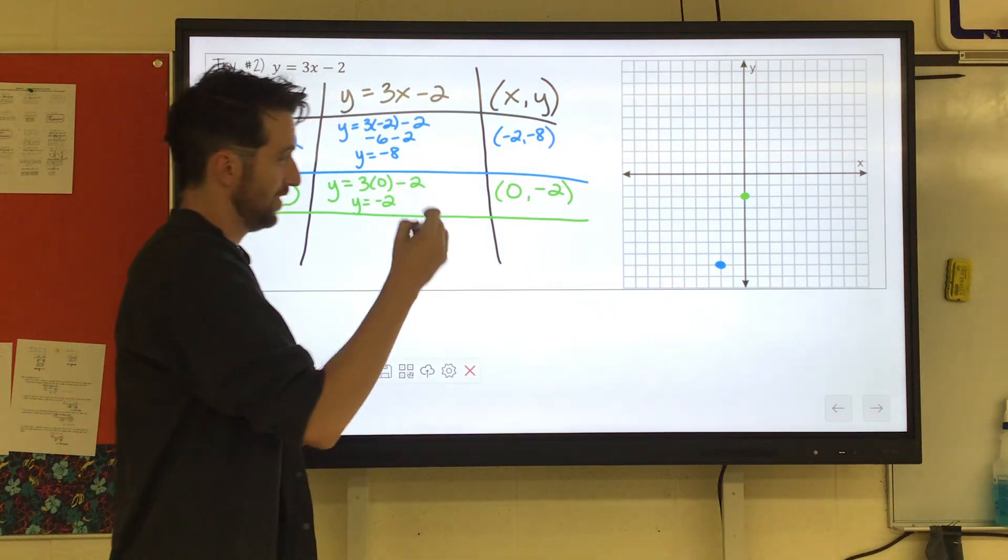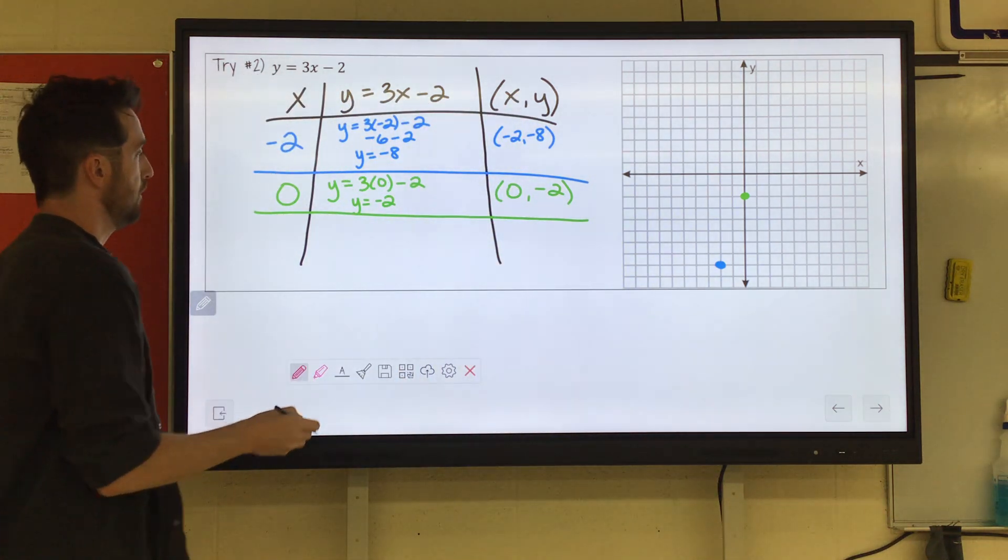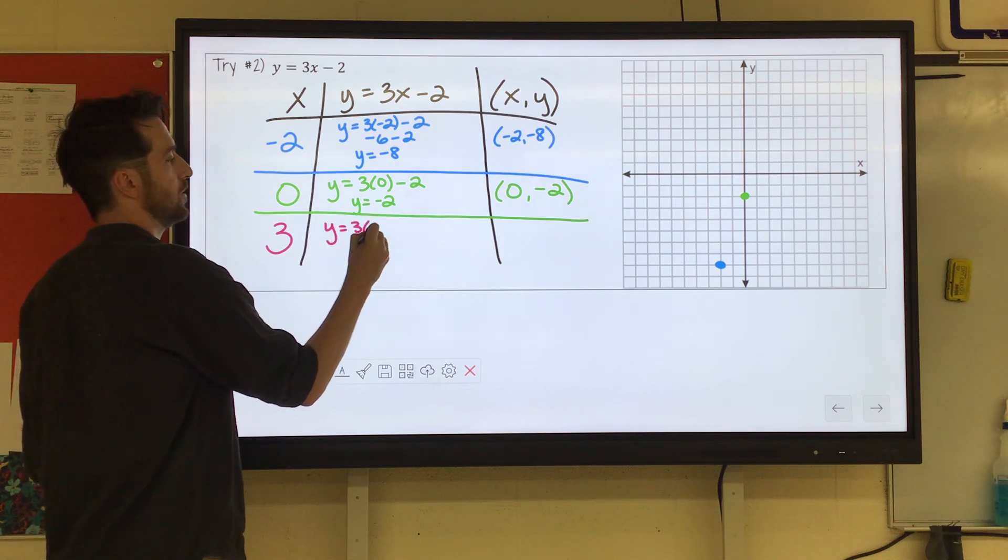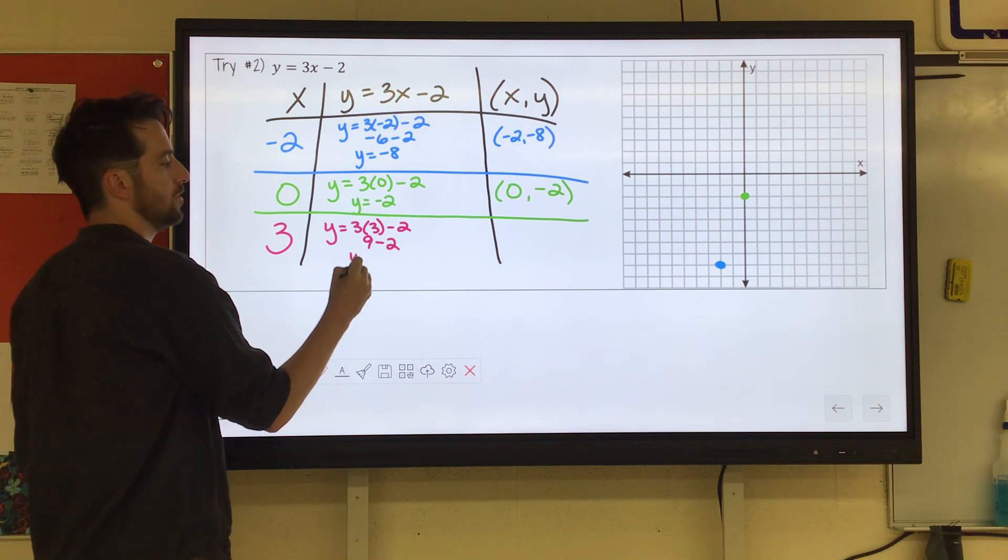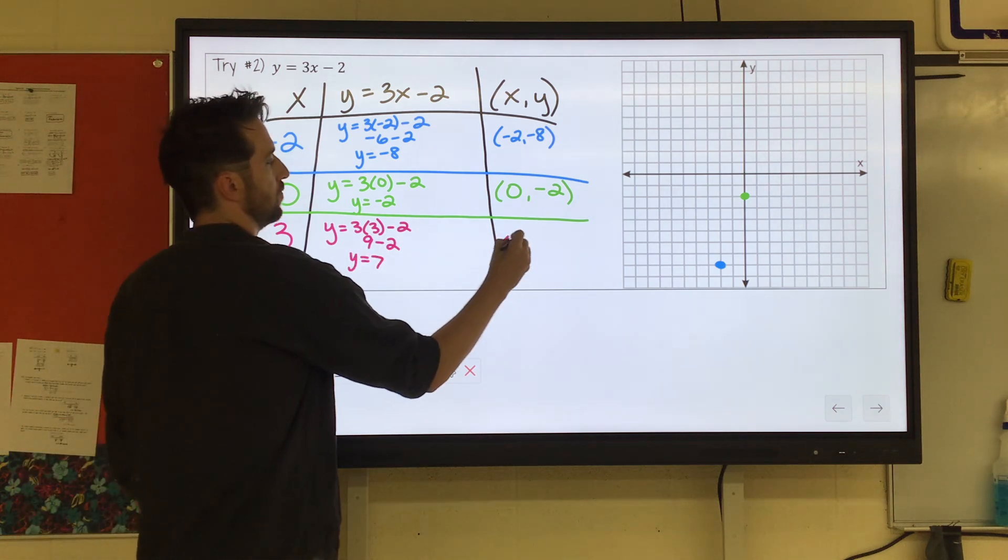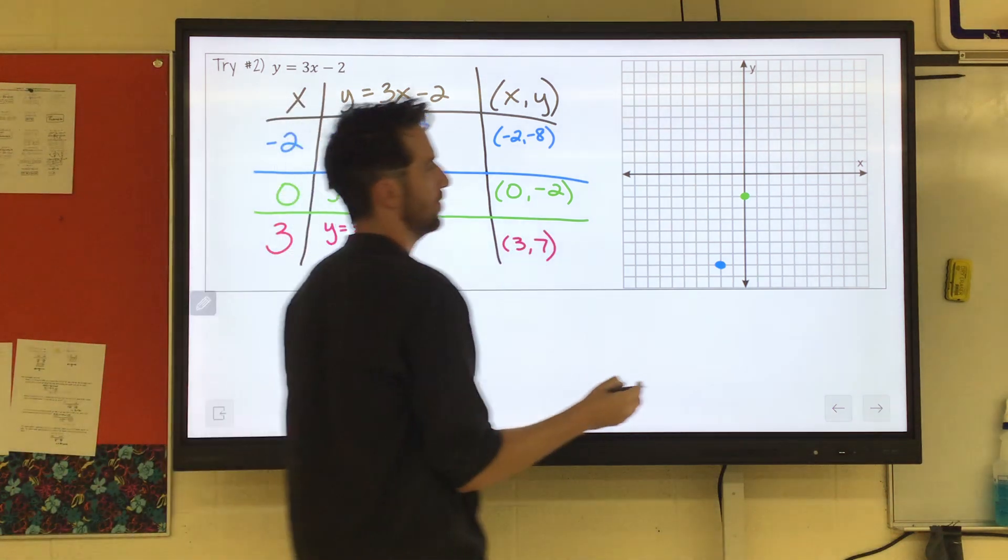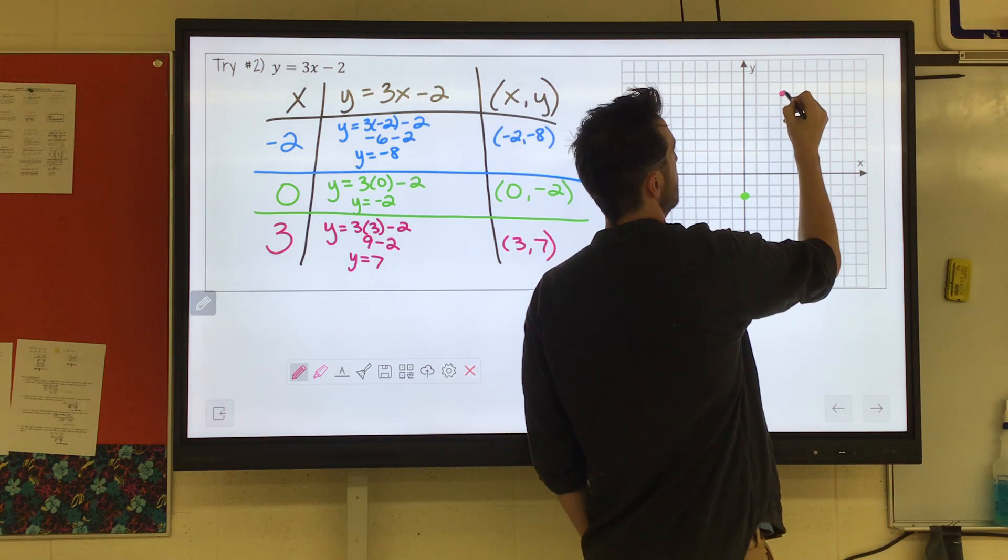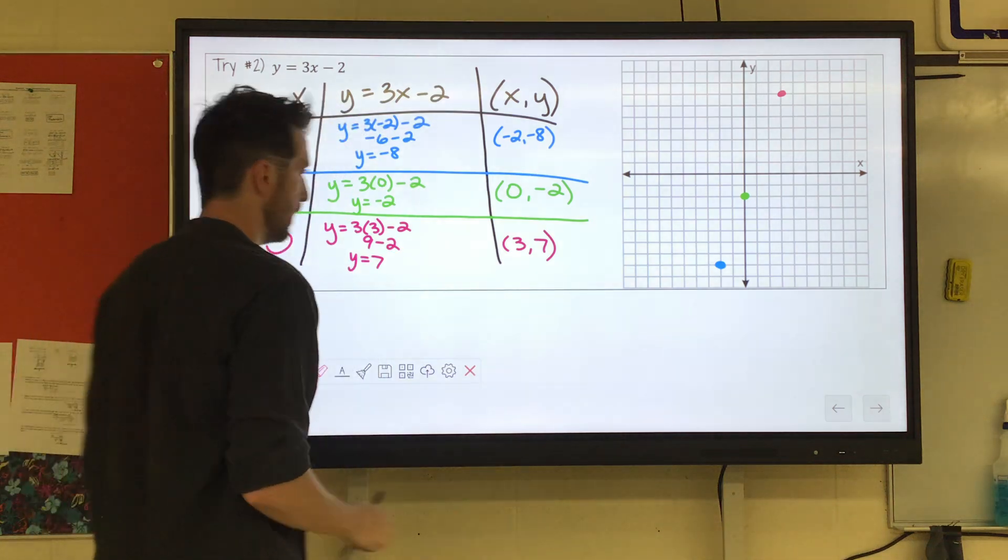And then, let's say I pick 3. Whoa! y equals 3 times 3 minus 2. 3 times 3 is 9, minus 2 is 7. 3, 7. 1, 2, 3. 1, 2, 3, 4, 5, 6, 7. And then, nice, forms a straight line.